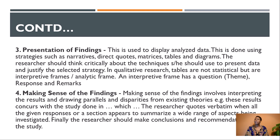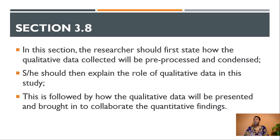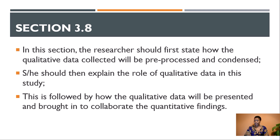These steps are very similar to quantitative analysis. Once you have pre-analyzed, condensed, and presented the data, these are the steps you mention in section 3.8 when you have qualitative data. You explain how you will pre-process your data, how you will condense it, how you will present the findings, and how you will make sense of it. Do not forget to explain the role of qualitative data in your study and why you need it. If your study uses a mixed method approach with both quantitative and qualitative data, always start with quantitative data — descriptive statistics first, then inferential — and then bring in qualitative data to corroborate the quantitative findings.